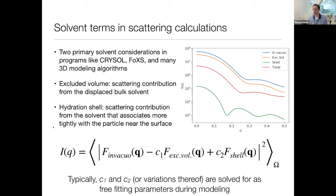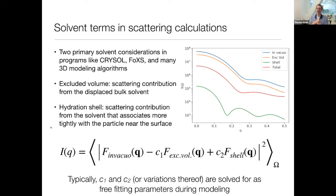The hydration shell results from water molecules in aqueous solution associating with the surface of a particle more strongly than they do in bulk solvent. Near a protein, they form more hydrogen bonds — one reason why proteins fold. This causes water molecules to be a little more ordered and present more frequently near the surface than in bulk solvent where they're more disordered. They end up having a slightly larger contrast. This is a small but important contribution to account for.